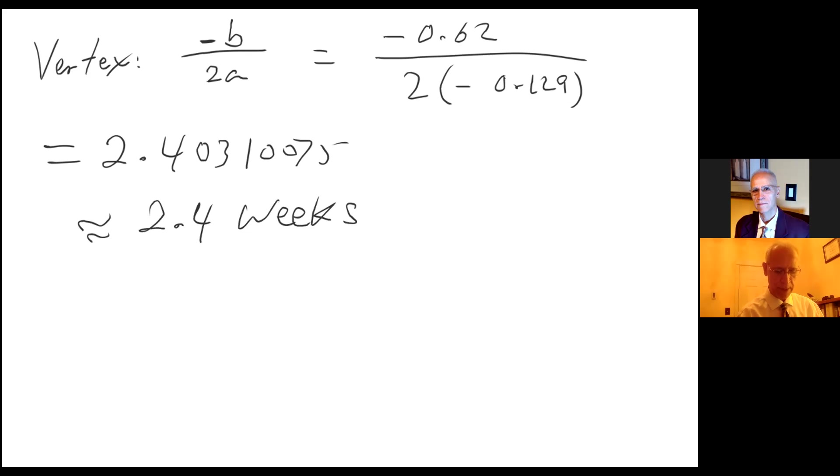So part B was asking to find the actual maximum revenue. So in 2.4 weeks this grower would maximize the revenue. So the question is, what is the actual revenue? That's easy. R(2.4031) equals... I'm going to go ahead and substitute that in my revenue function.